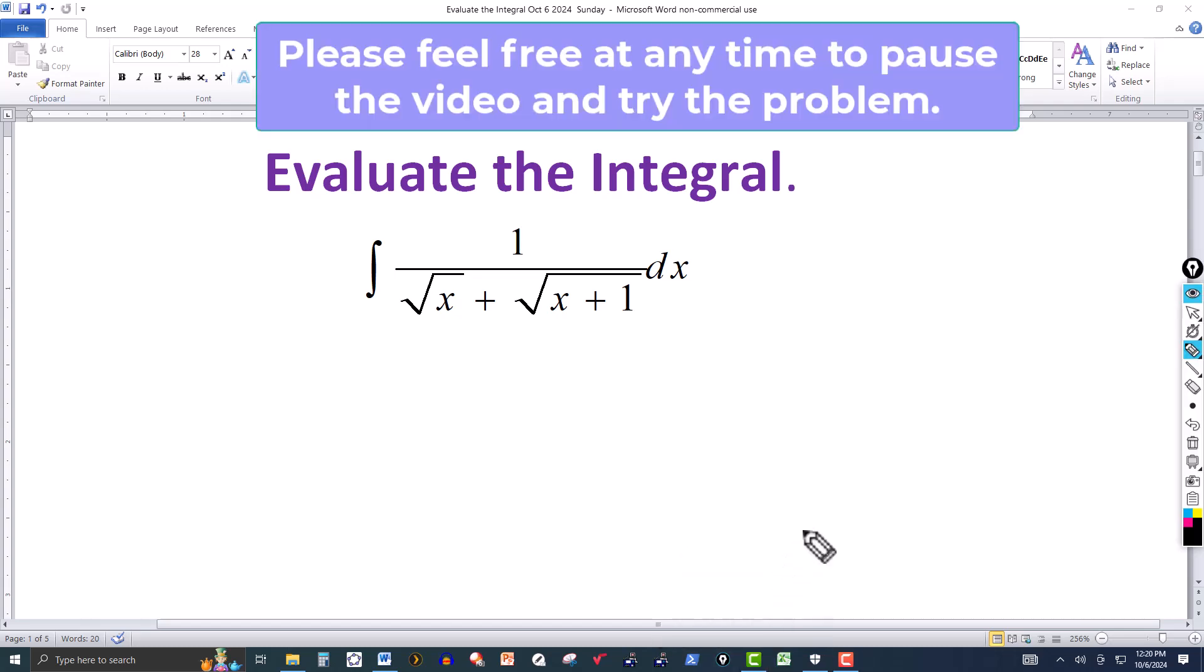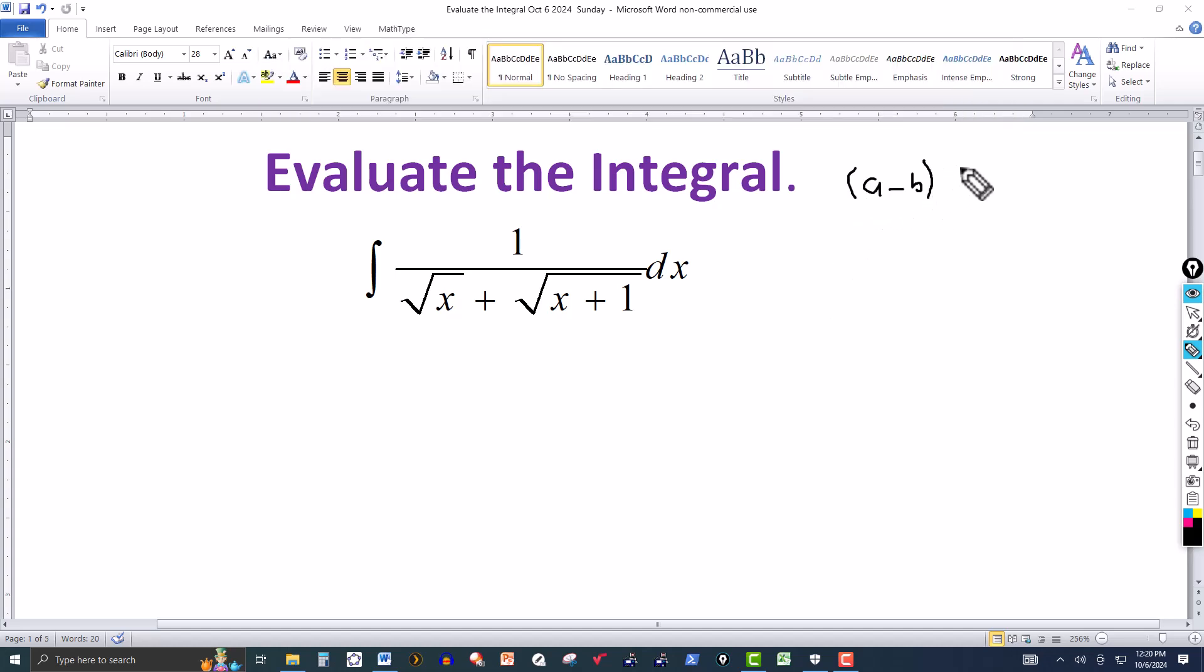Normally when we have a radical expression in the denominator, one of the things we do is rationalize the denominator. If I have the product of a minus b and a plus b, the difference and the sum of the same two terms, we know that's going to be the difference of the squares. So this will be a squared minus b squared.